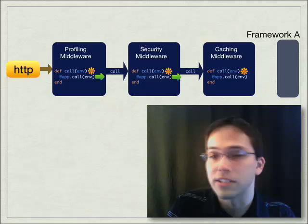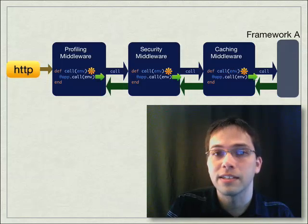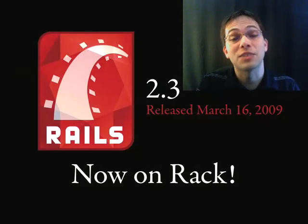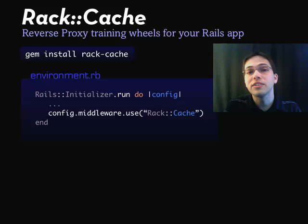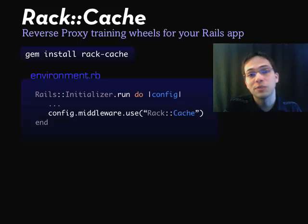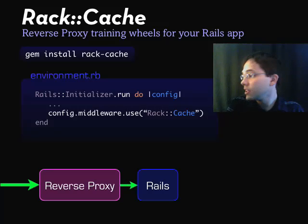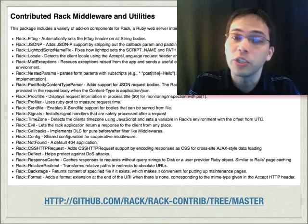So one piece of middleware calls the next, which calls the next, and then reaches all the way to our Rails application. Once we have a response, it travels back through the stack and out to our client. Rails 2.3 now has Rack support, so we can put in our own pieces of Rack middleware. If you watched the previous screencast on reverse proxy caching, we used the Rack cache middleware so that a reverse proxy cache sat in front of our Rails application. If you take a look on GitHub, there's already a lot of Rack middleware you can use with your application.